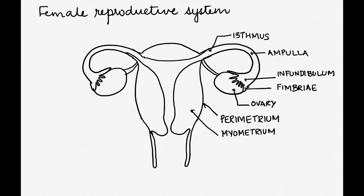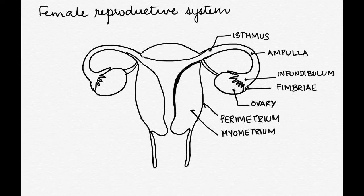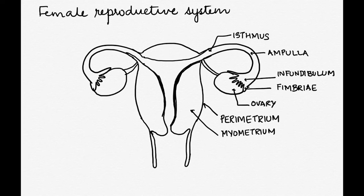The innermost layer is the most important part of the uterus, that is the endometrium. This endometrium shows regular thickening or proliferation during the menstrual cycle — it proliferates and then sheds off during the menstrual phase. So this innermost part is what we call the endometrium.